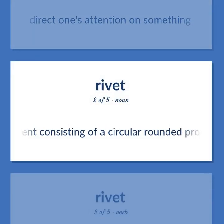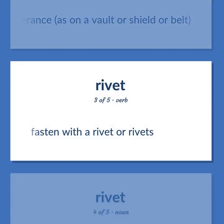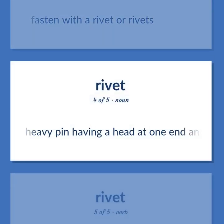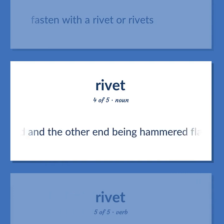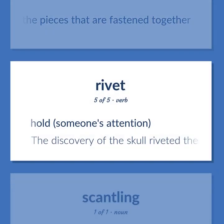Rivet: Ornament consisting of a circular rounded protuberance, as on a vault or shield or belt. Fasten with a rivet or rivets. Heavy pin having a head at one end and the other end being hammered flat after being passed through holes in the pieces that are fastened together. Hold someone's attention — the discovery of the skull riveted the paleontologists.